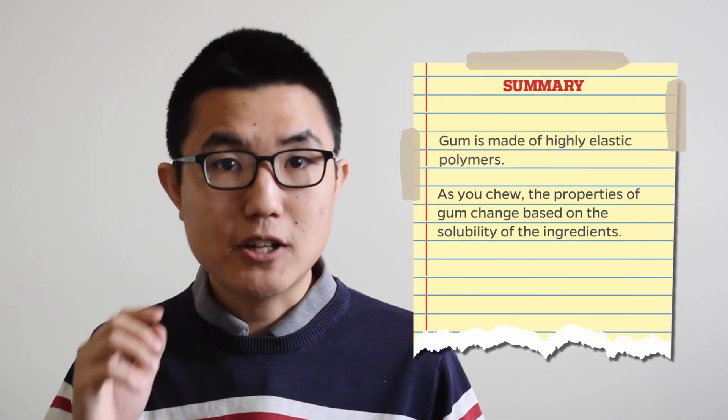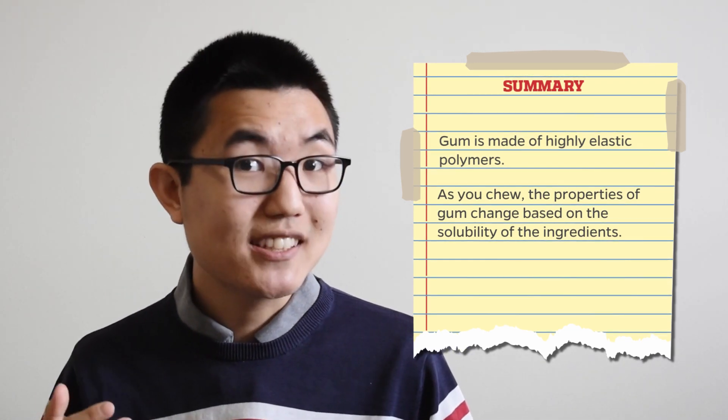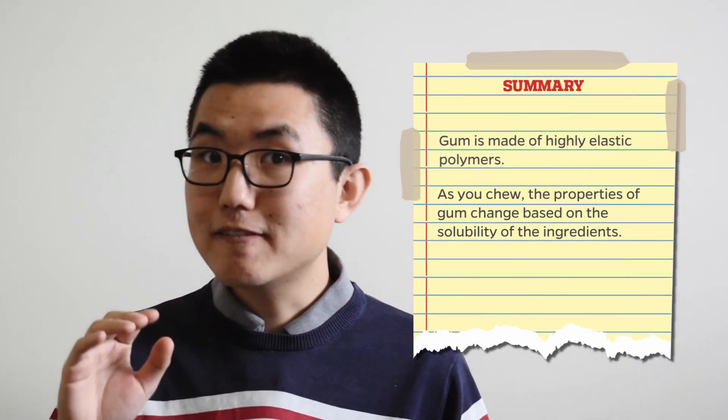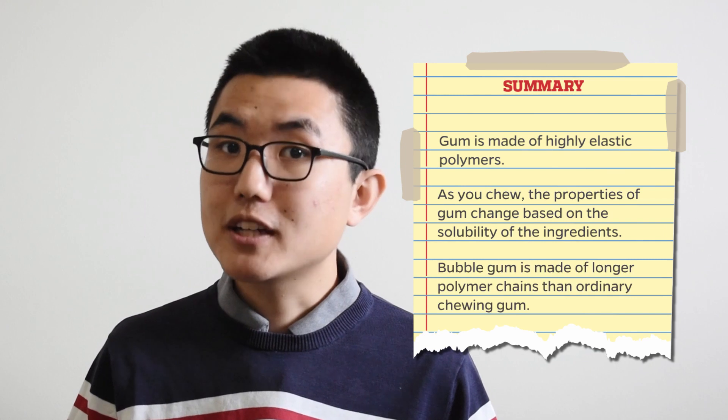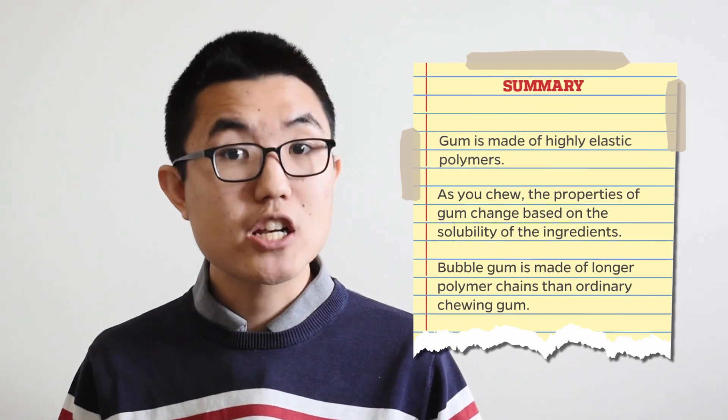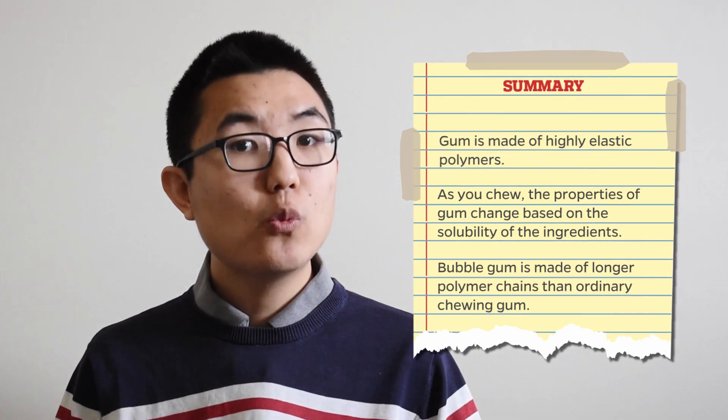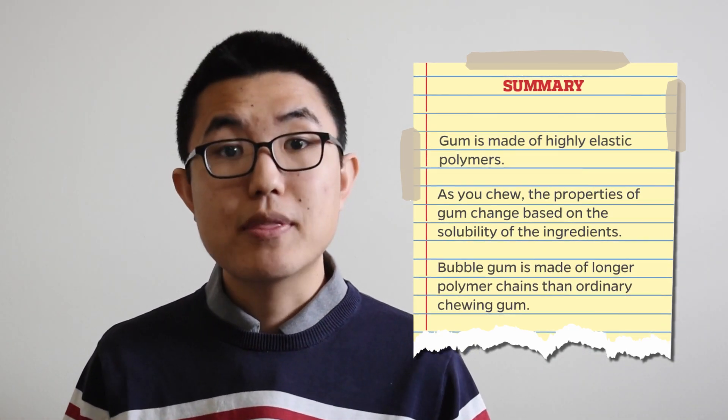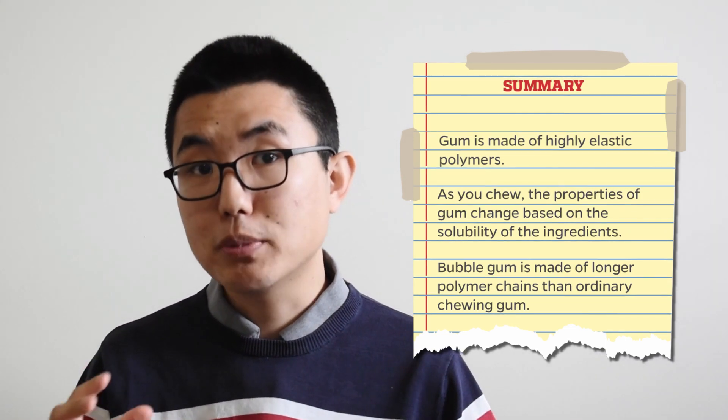Then the texture becomes harder, because the plasticizers dissolve next. And finally, bubble gum is made of longer polymer chains than ordinary chewing gum, which gives bubble gum the strength to hold an air bubble when you blow. Now, if you have a food you've always been curious about, email us or comment below. We'd love to hear your ideas as we continue our journey through the science of food. Till next time!